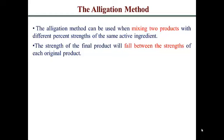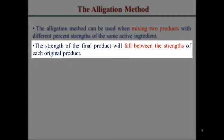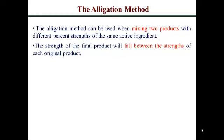The allegation method is typically used when you're compounding a preparation of a given strength and you're using two products of different strengths — mixing those two products to obtain your final compound preparation. The key thing to note is that the strength of your final product must be between the strengths of your original two or three products that you're mixing. So if you wanted a product that is 10% strength, you can combine anything above 10 and below 10, but you could not mix two products with a percentage strength less than 10 to obtain a final product of 10%.